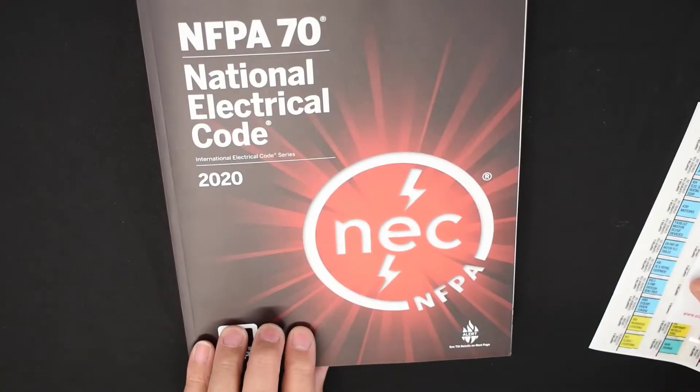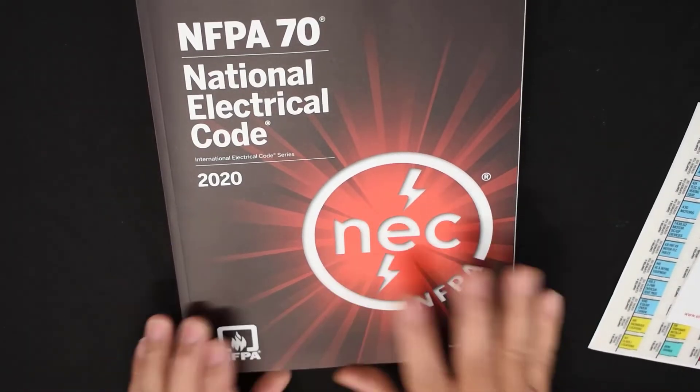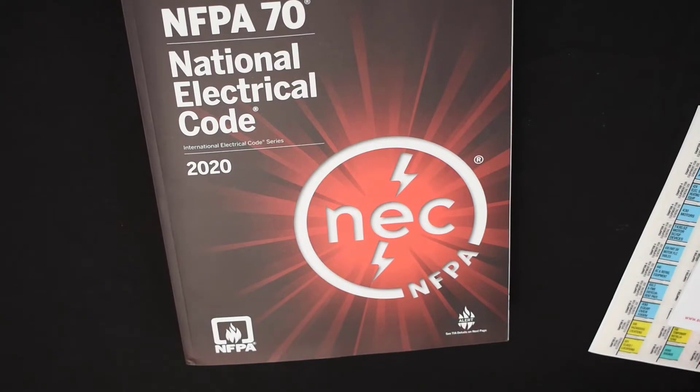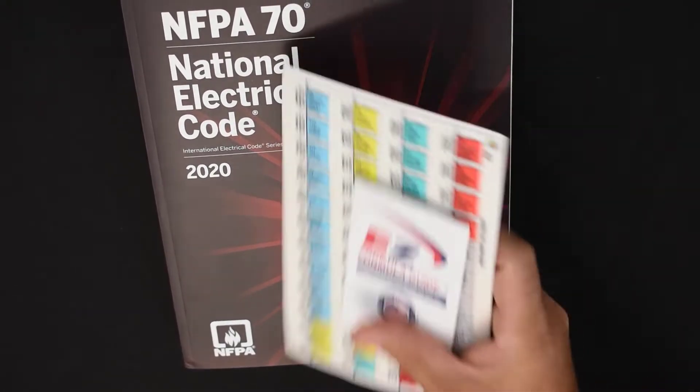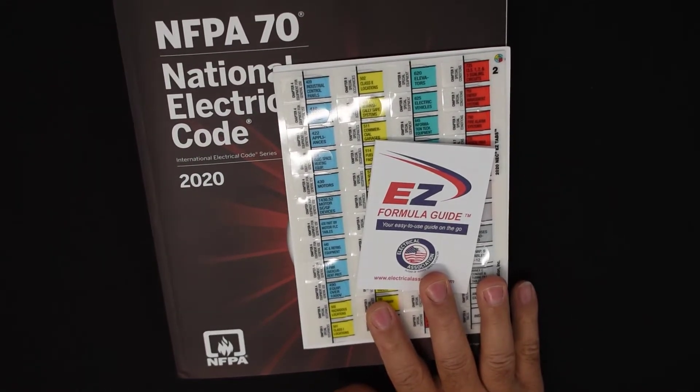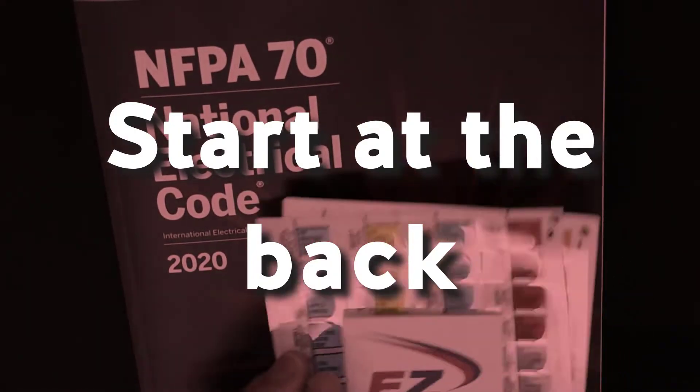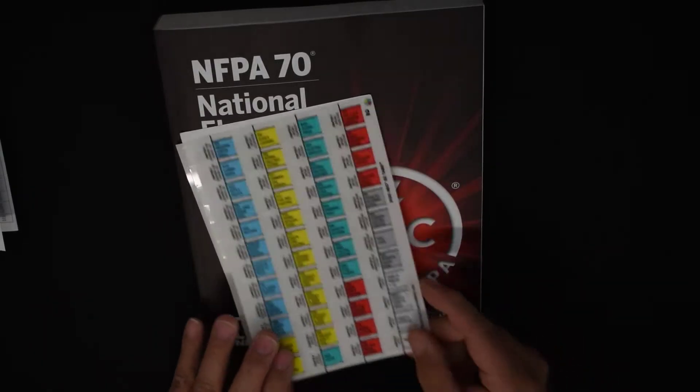When you guys get your mailing, you'll have a brand new 2020 National Electric Code book as well as a set of Easy Brand tabs. Start at the very back. If you notice, the index tab is in the front.